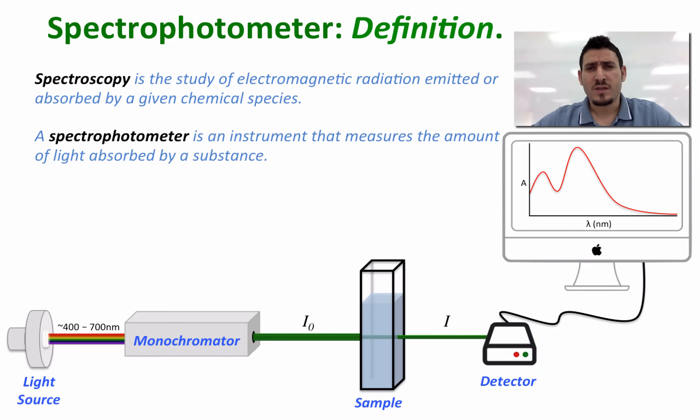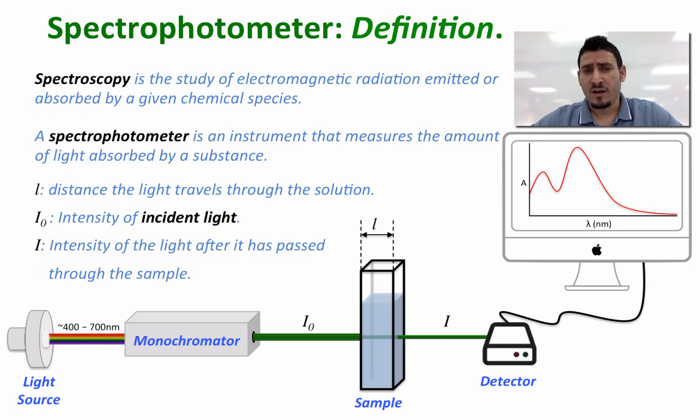Things to take into consideration when we do this measurement are the length of the cuvette. So l is the distance the light travels through the solution, i0 is the intensity of the incident light before hitting the sample, and i is the intensity of the light after it has passed through the sample.